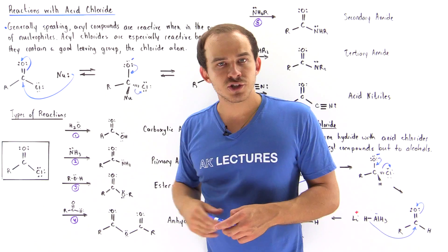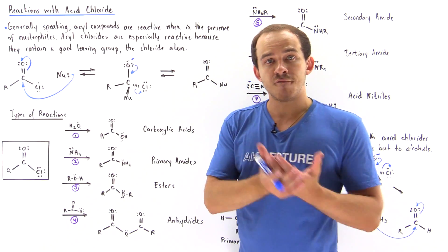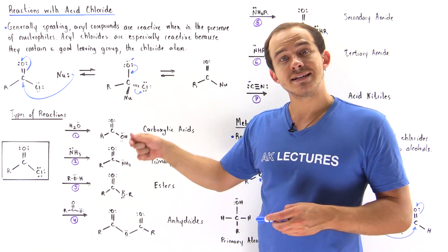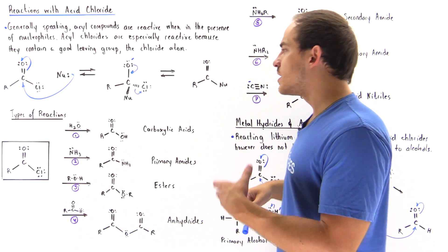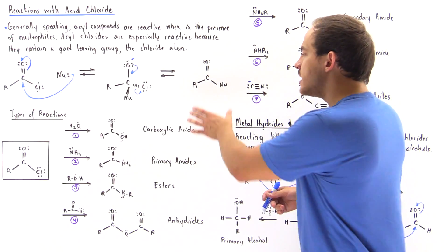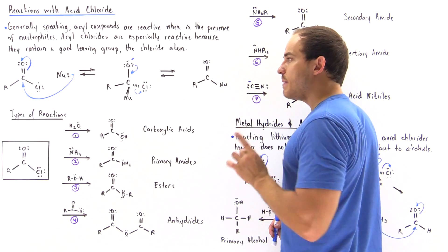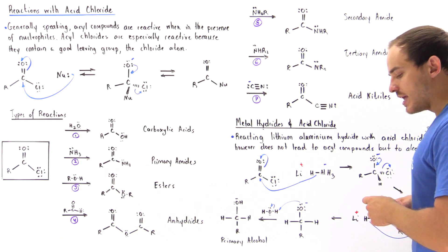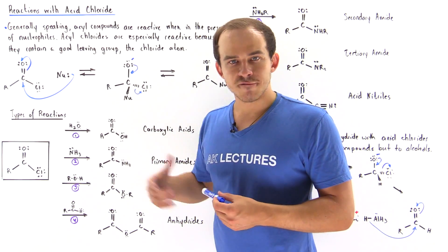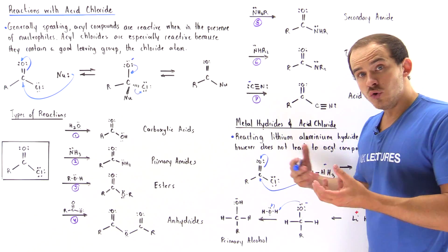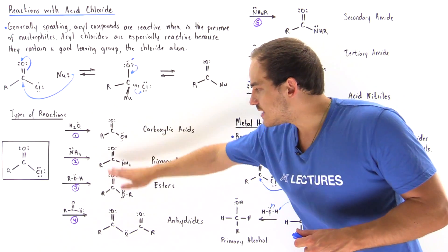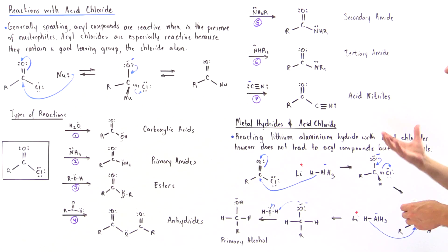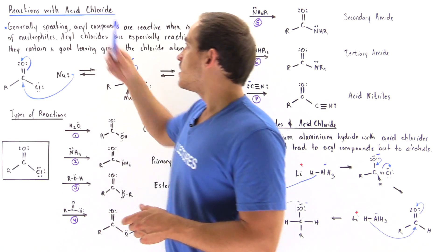The second step is the elimination step, in which the pi bond is reformed between the oxygen and carbon, and the carbon-chloride bond is broken, detaching the good leaving group — the chloride ion. We form an acyl compound in which the chloride group is replaced with the nucleophile group. So the question is: what exactly could this nucleophile be? Basically any strong nucleophile works, and we have listed seven different types that can be used to form seven different acyl compounds from our starting material, the acid chloride.